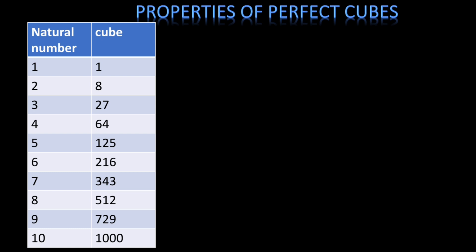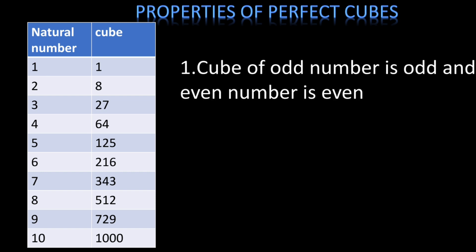Let us start with some properties of perfect cubes. These are the cubes of natural numbers — that means these are the perfect cubes. The cube of an odd number is always odd, and the cube of an even number is always even. This is one of the properties.